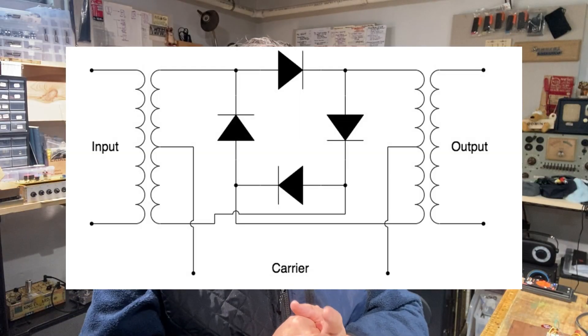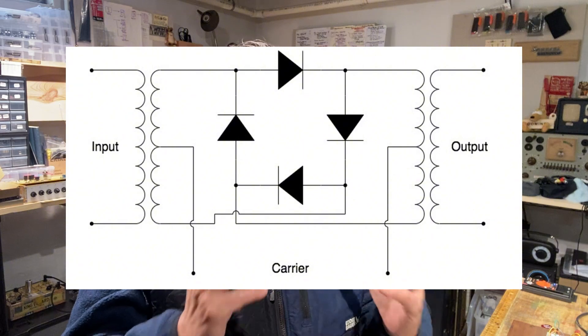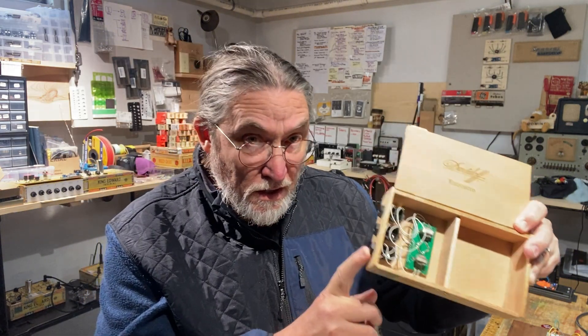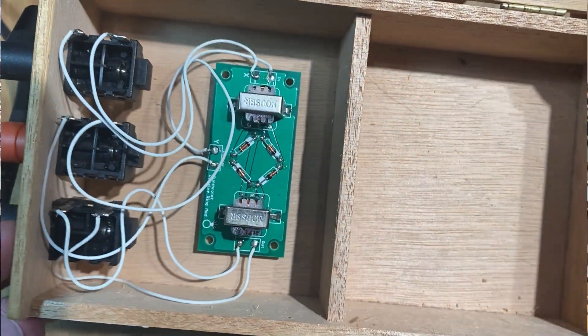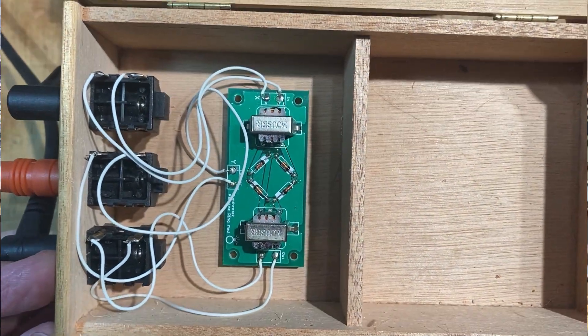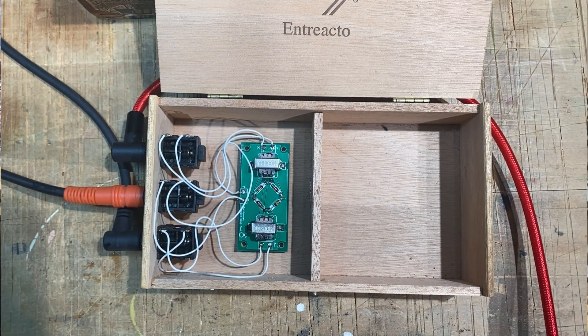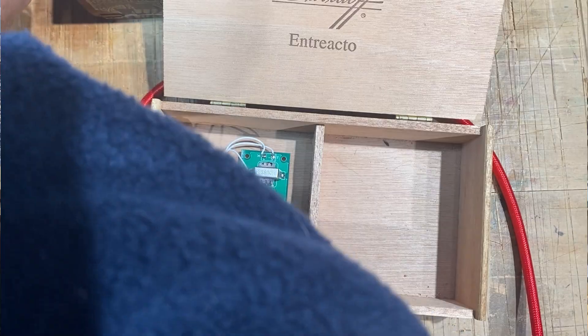So here's a typical schematic of what a ring modulator looks like. I have a version of that circuit here, and I will have links for these in the description below. So let's give a listen to the passive ring modulator, and I want you to notice a couple of the drawbacks.